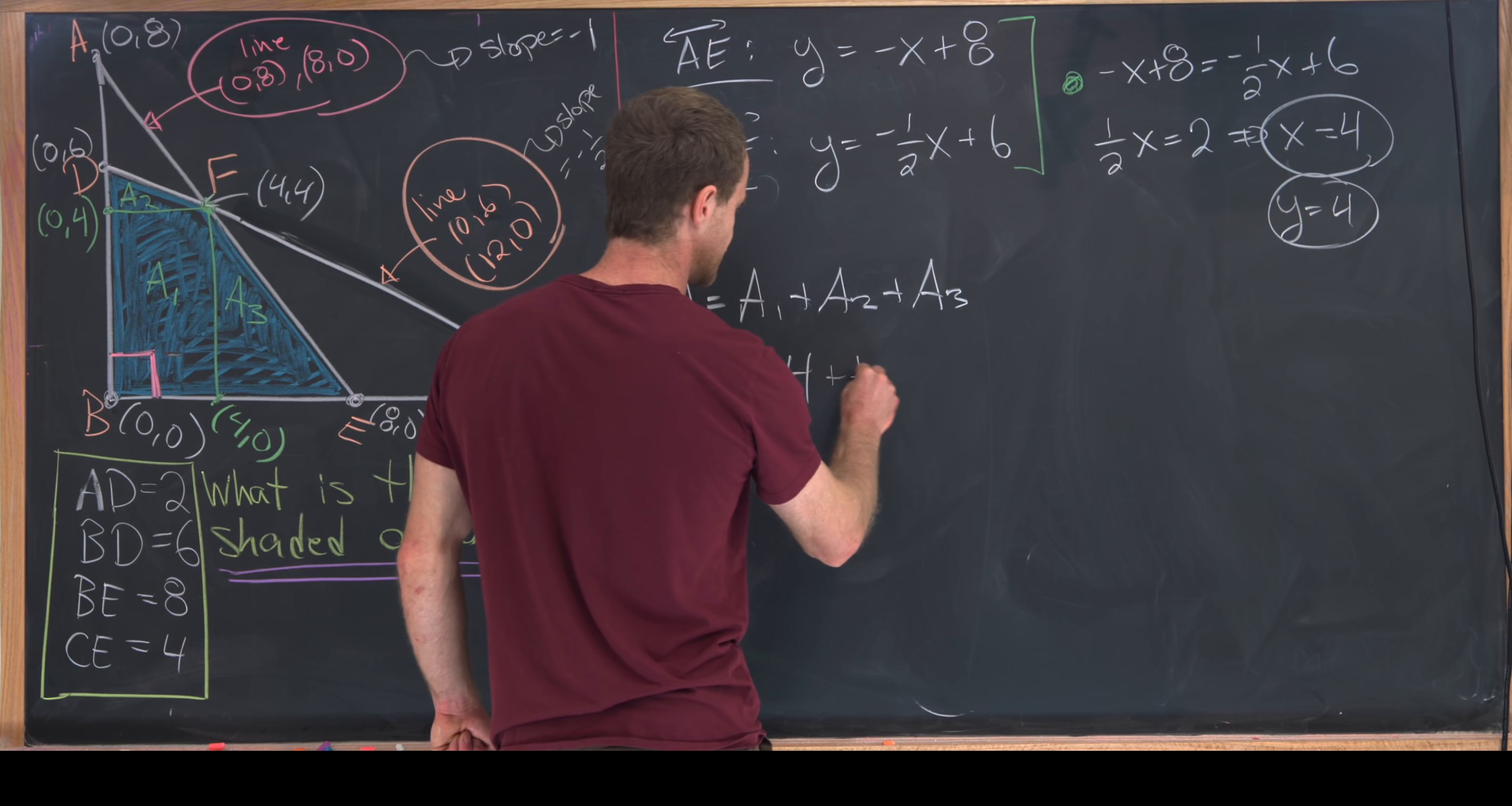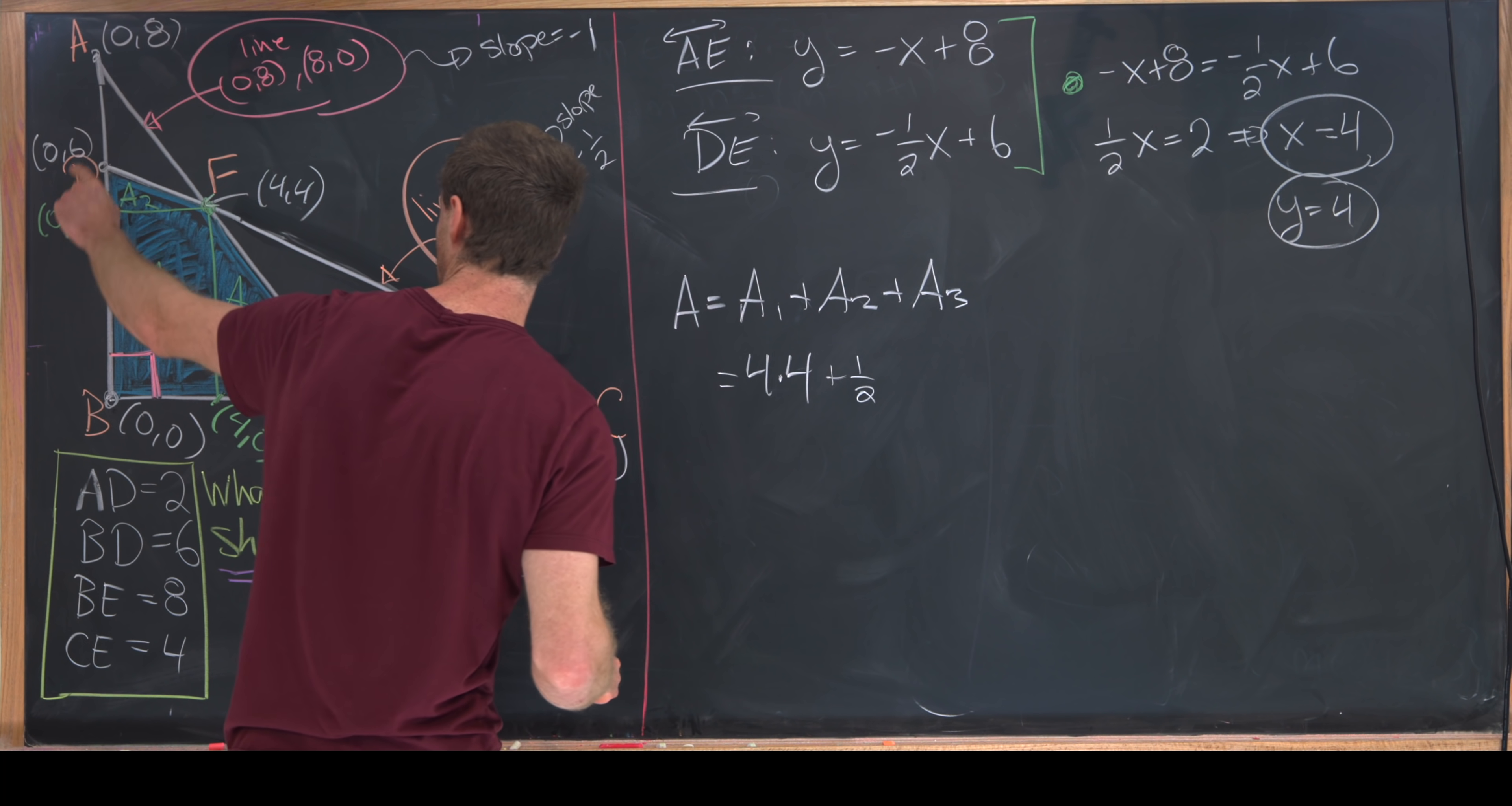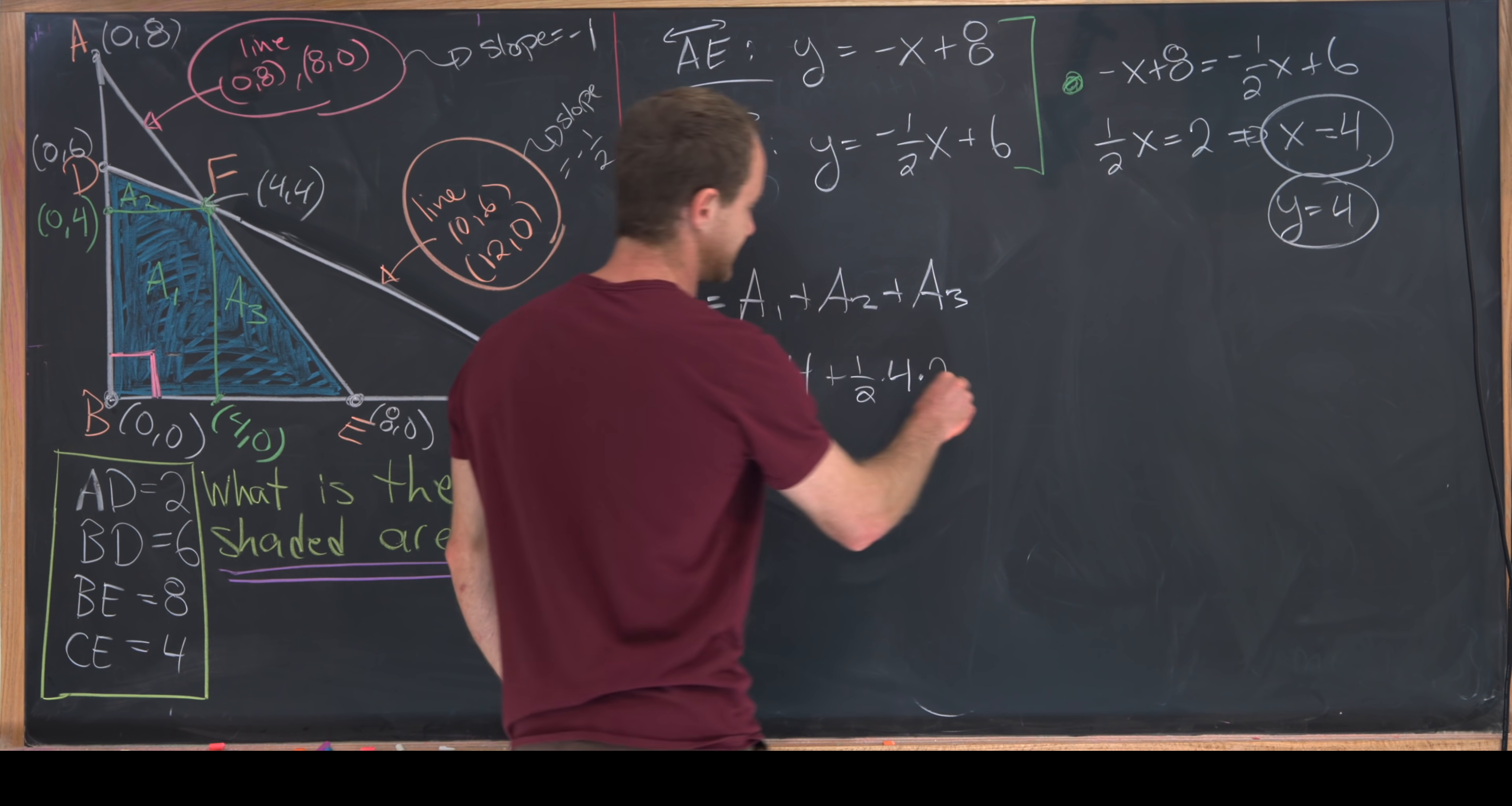The area of region 2 will be 1/2 base times height for a triangle, but that's a right triangle with a base of 4 and a height of 2, because we're going from y = 4 to y = 6. So that'll be 1/2 × 4 × 2.